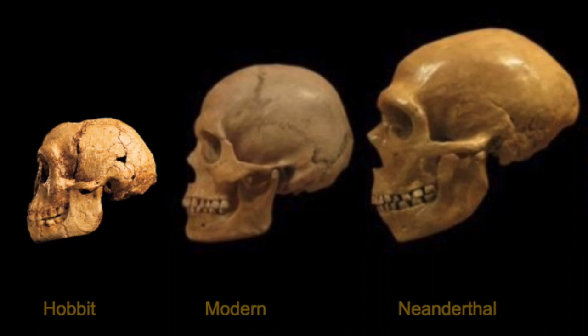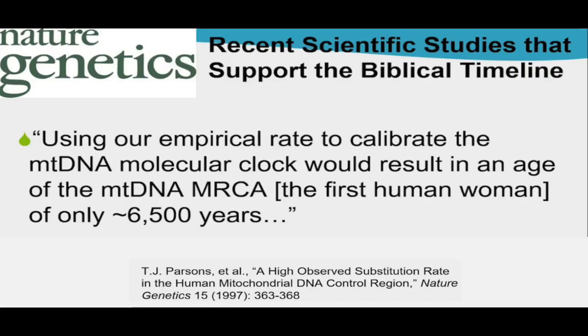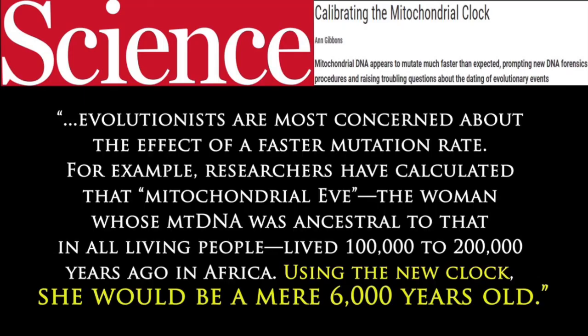Also, there are not enough total accumulated mutations if evolution was true. And no matter where you test in the mitochondria, we find that mutation accumulation only goes back about 6,000 to 6,500 years.